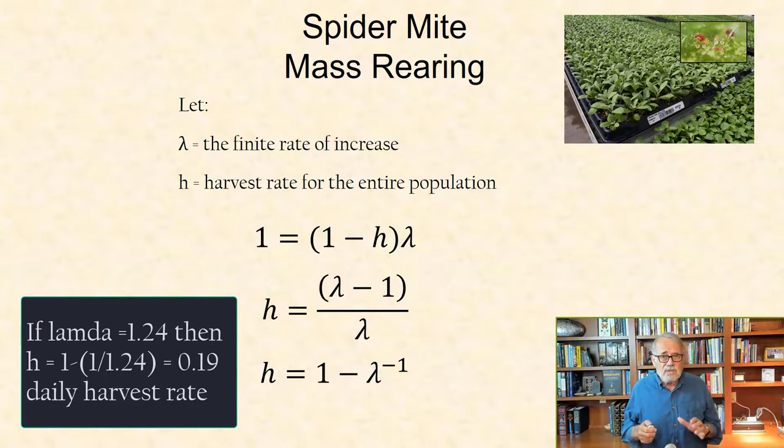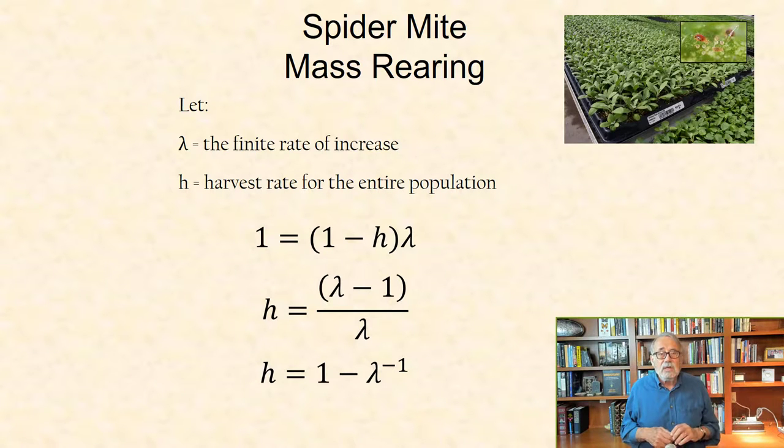Because the same fraction of each age class is removed from the population, the age structure of the factory population will be identical with the age structure, or stage structure, of the unconstrained, that is, unharvested population.